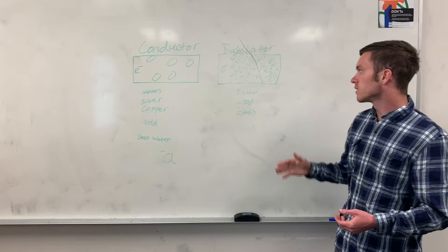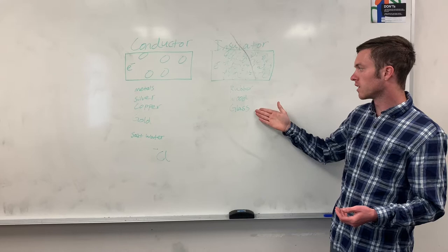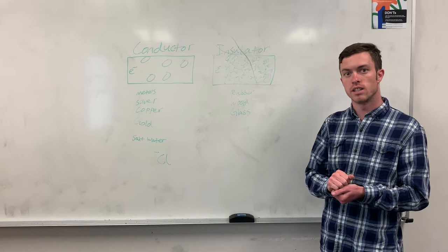An insulator, these tend to be materials such as rubber, wood, and glass. These types of materials hold onto their electrons very tightly. And they have a hard time receiving electrons and letting go of their electrons.